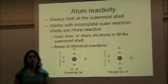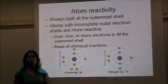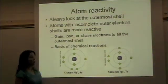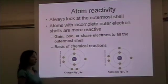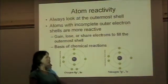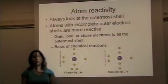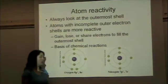To figure out if an atom is going to undergo a reaction or not, you always want to look at the outermost shell. Atoms with incomplete outer shells are most likely to undergo a reaction. Here's oxygen, here's nitrogen.